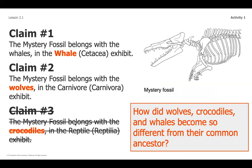We're going to move into a deeper question in this second chapter. We're going to really dive into how did all of these different species come about on Earth and look so different? If they're all related, how did they end up becoming so different? We're going to focus on those three species and really dive into why wolves, crocodiles, and whales are so different from their common ancestors.